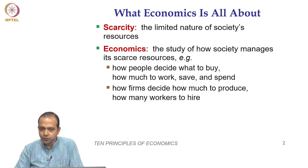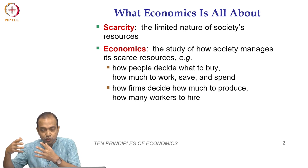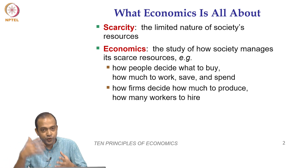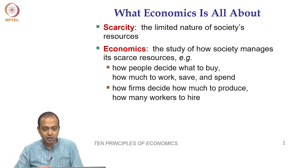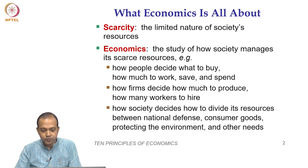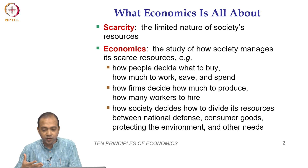When you think about firms, they are also thinking about how much to produce, because production requires capital, material, energy, and labour — and all these resources are scarce. Firms need to allocate these resources and decide how much to produce and how many workers to hire. At the society level, the question is how society allocates scarce resources among national defense, consumer goods, protecting the environment, and other needs.